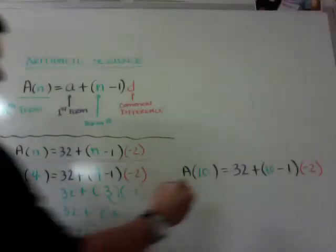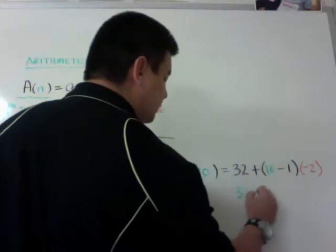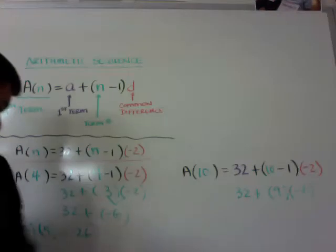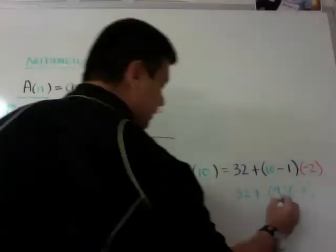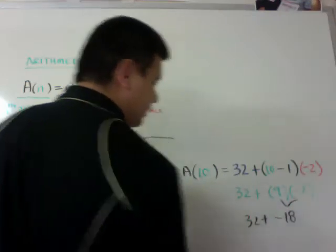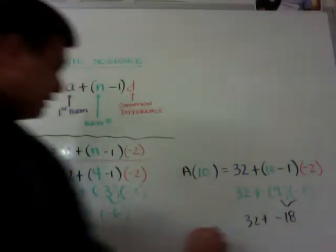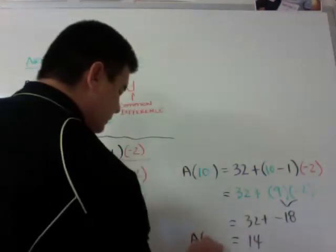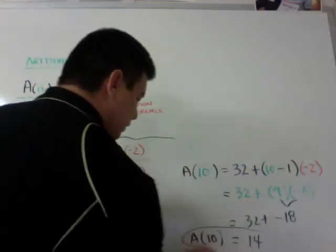So when we do this, again, parentheses first, so 32 plus 9 times negative 2, I'm going to change pen since it's dying, and then I get 32 plus negative 18, which is equal to 14.